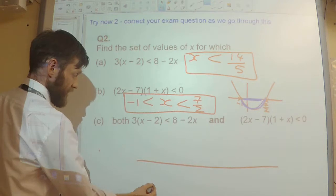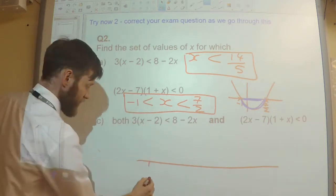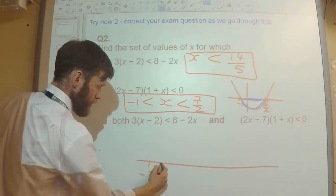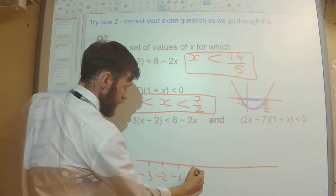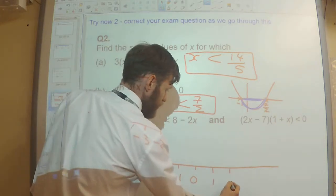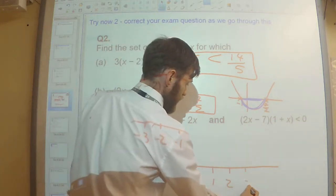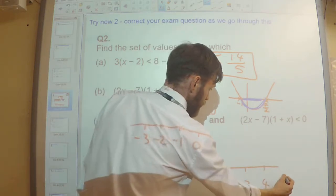And my number line is going to start off, so I'm going to start off maybe minus 3, minus 2, minus 1, 0, 1, 2, 3, 4, 5.